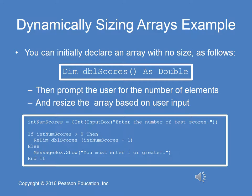Here's a coded example of dynamically resizing an array. We declare an array as a double with no size. Then we prompt the user for the number of elements and resize the array based on user input during runtime. The first dim double scores as double is done during design time, and when it's compiled it has a size of zero — or effectively index value of zero. During runtime, we prompt the user for the number of test scores to be stored in the array, and if that value is greater than zero, we use redim double scores and redeclare its largest index number as int number of scores minus one.